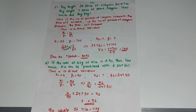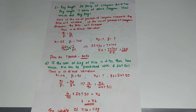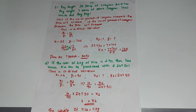Our next question: Raj bought 35 packs of crayons for Rs. 700. Roy bought 7 packs of the same crayons. How much did Roy pay? We know that if the number of crayons decreases, the price will also decrease, so this is a direct variation.